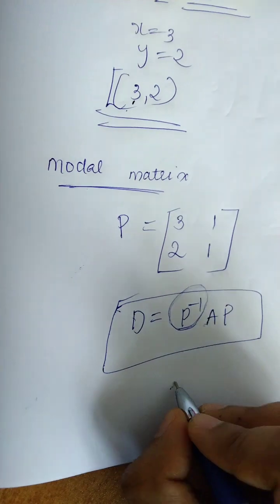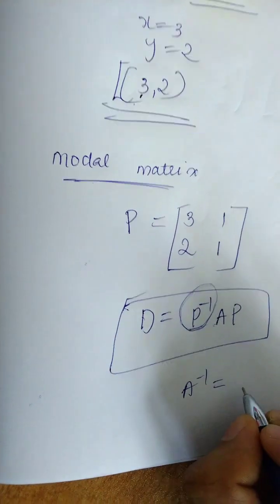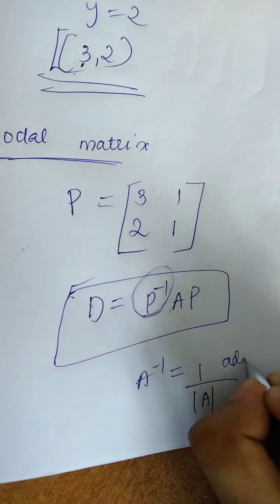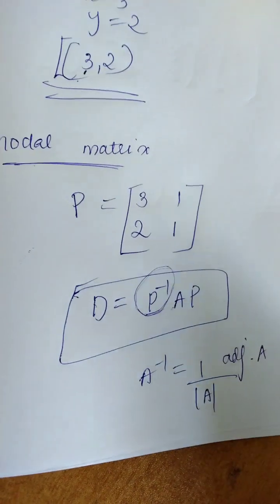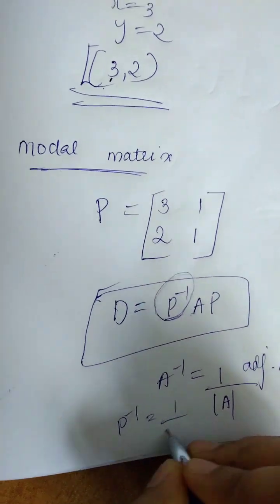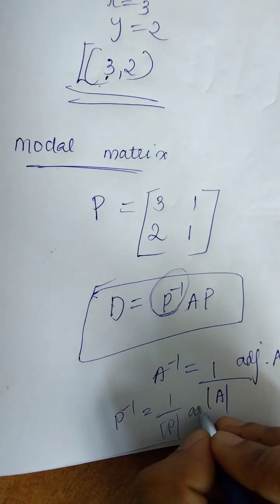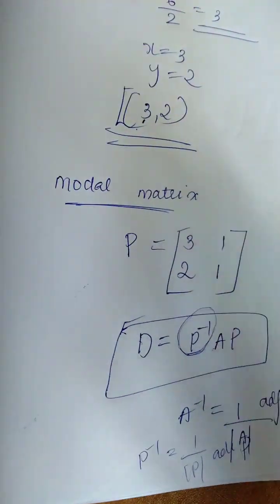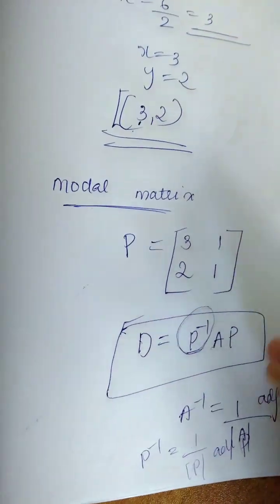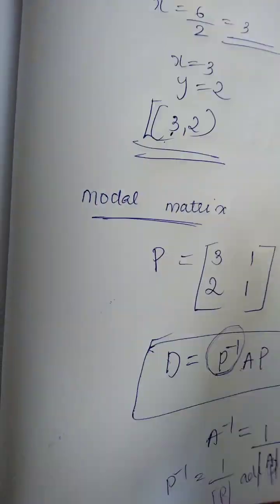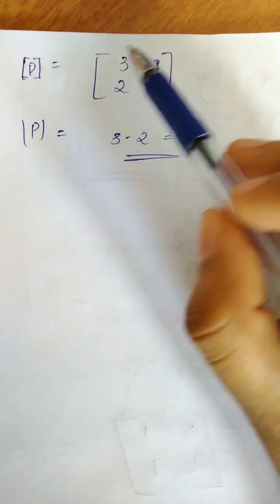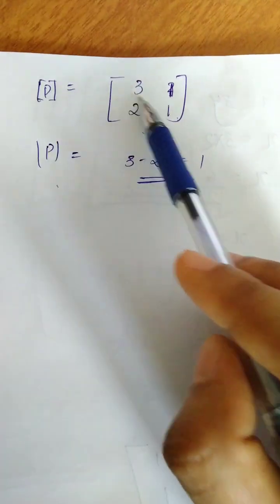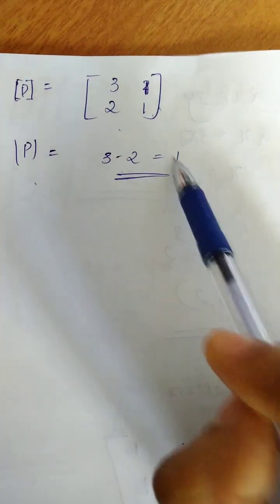To find P inverse, we use the formula: P inverse equals 1 by determinant of P times adjoint of P. Matrix P is [3, 2; 1, 1]. The determinant of P is 3 times 1 minus 2 times 1, which equals 3 minus 2, equal to 1.